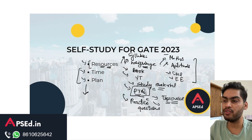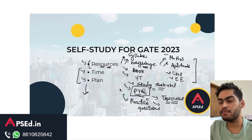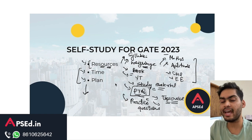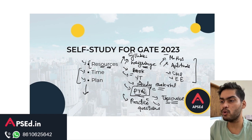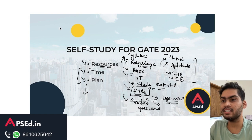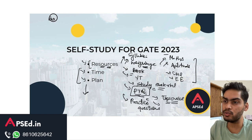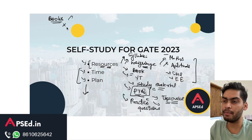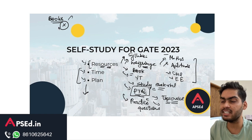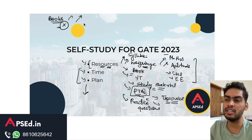Once you have figured out the syllabus and weightage and looked at the sources, you need to decide which source to use for actual understanding of each topic. You can use books, a YouTube channel, or study material. However, if you are trying to use books to study for GATE, I would not recommend it — this is probably a major mistake I made in my own preparation.